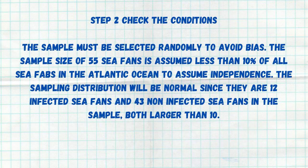Step two is checking those conditions. The sample must be random to avoid bias. The sample size of 55 sea fans is assumed to be less than 10% of all of them, so we can assume independence. And the sampling distribution is big enough because we have 12 successes — infected sea fans — and 43 failures — non-infected sea fans. Both numbers are larger than 10, so our sampling distribution will be normal.